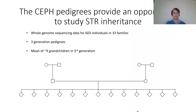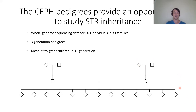Based on the success Tom and Julie had looking at mutation rates, we also wanted to use the CEPH pedigrees to look at STR mutation rates. We have whole genome sequencing data for 603 individuals in 33 different families — all three-generation pedigrees with both sets of grandparents, the parents, and all grandchildren. This anonymized example shows 13 individuals in the third generation, while the mean is nine, so these are still very large families.